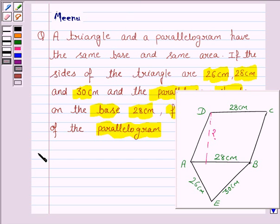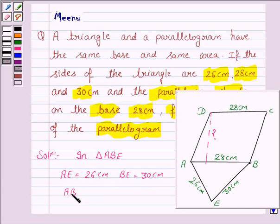Let us now move on to the solution. We are given the sides of triangle ABE as AE is 26 cm, BE is 30 cm and AB is 28 cm.